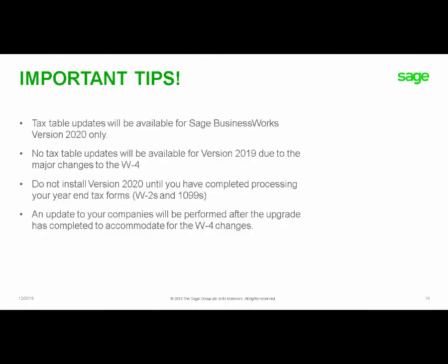Some important tips before you install Sage BusinessWorks version 2020: Tax table updates will be available for version 2020 only — no tax table updates will be available for version 2019 or earlier due to the major changes to the W-4. Do not install version 2020 until you have completed processing your year-end tax forms such as W-2s and 1099s. An update to your companies will be performed after the upgrade to accommodate the W-4 changes.